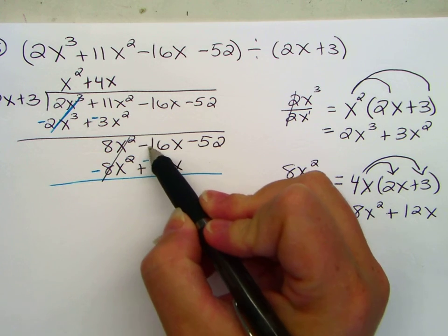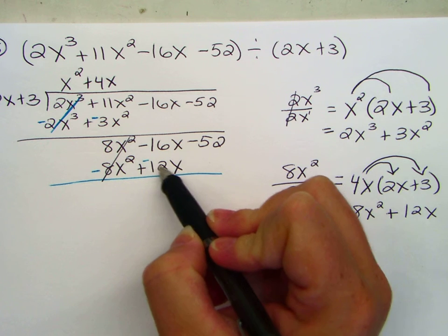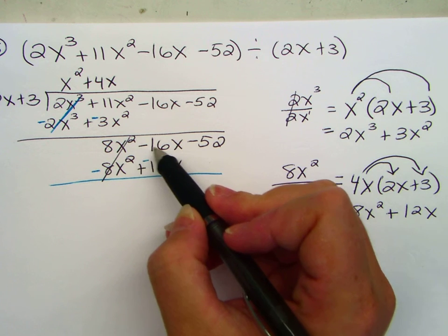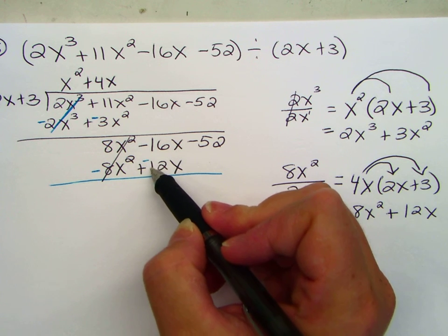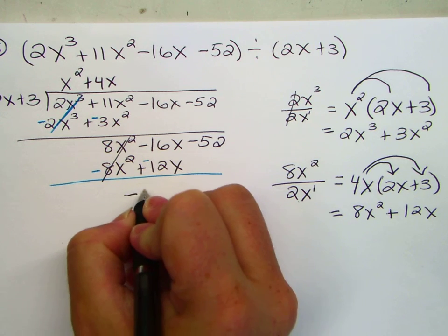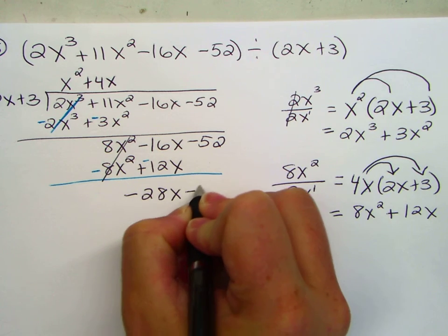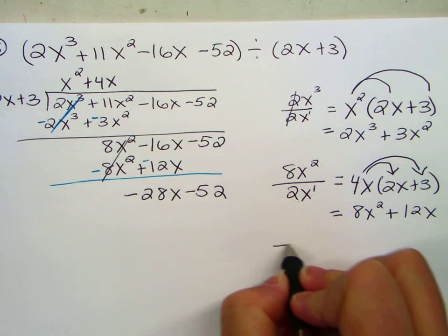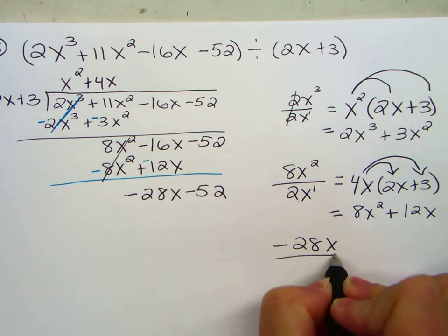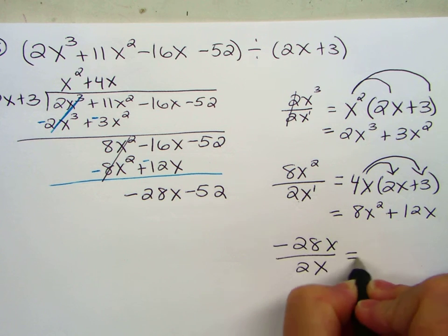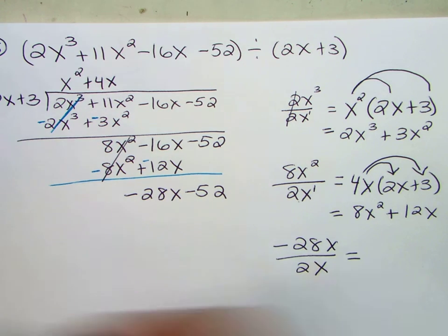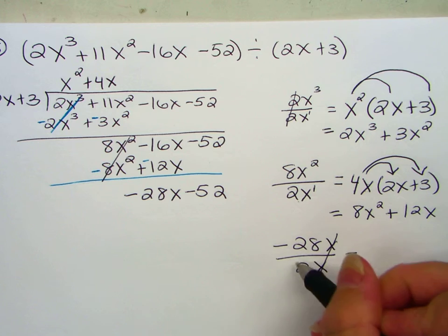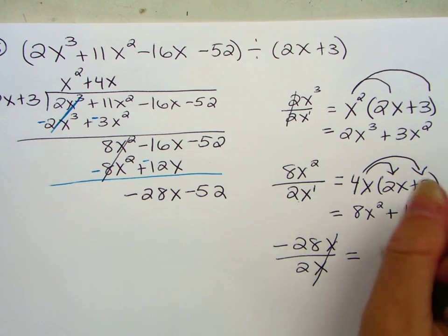Now be careful here. Negative 16x minus 12x. Negative 16x minus 12x is negative 28x. So careful there. Easy mistakes. All right, last one. Negative 28x. Highest term divided by highest term. What happens? The x's cancel. Negative 28 divided by 2 is negative 14.